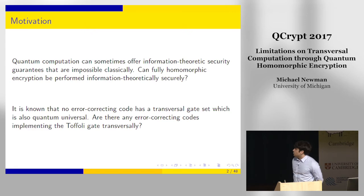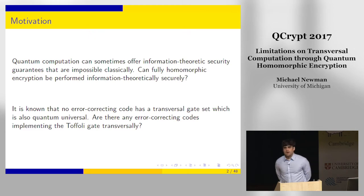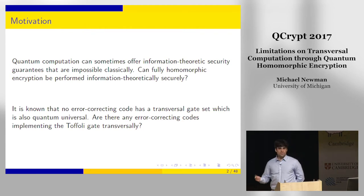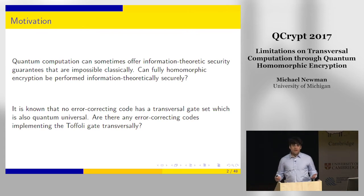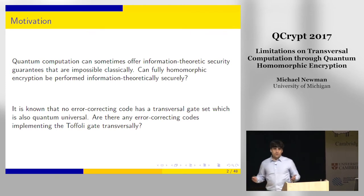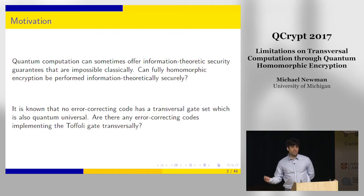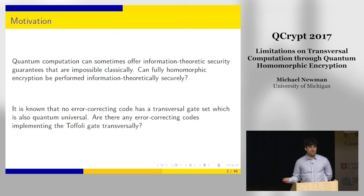A seemingly unrelated question: it's known that no error-correcting code has a transversal and quantum-universal gate set. This is really too bad because transversal gates are the gold standard in quantum fault tolerance—the gates with the least overhead. Since many useful quantum algorithms like Shor's algorithm are dominated by classical gates, we ask: are there error-correcting codes that can implement large sets of classical gates transversally, or in particular codes that implement the Toffoli gate transversally, since Toffoli is universal for reversible computing?